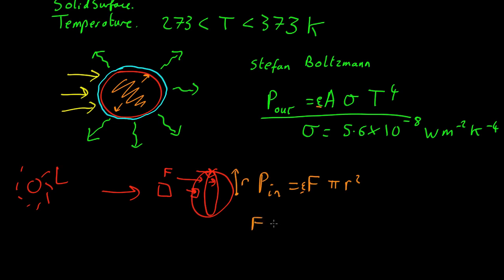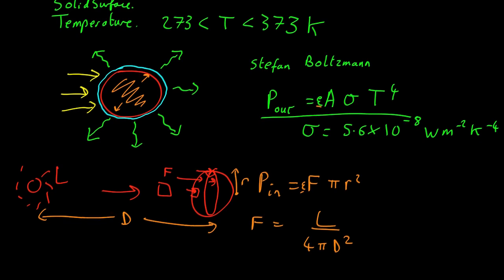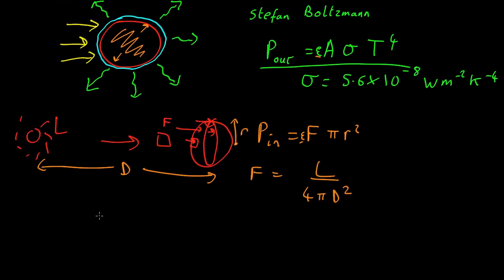We also know from the inverse square law that the flux is equal to the luminosity over 4 pi d squared, where d is the distance between the star and the planet. So let's set these equal to each other. So we get the power in, which is flux times pi r squared equals the power out, which is the surface area. For the power out, the area is the entire surface area. So surface area of the sphere is 4 pi r squared.